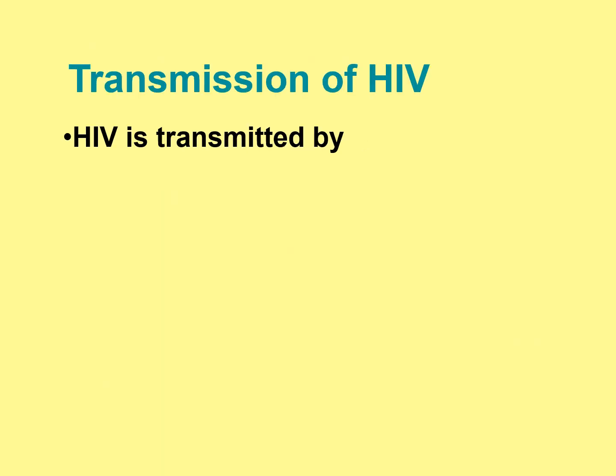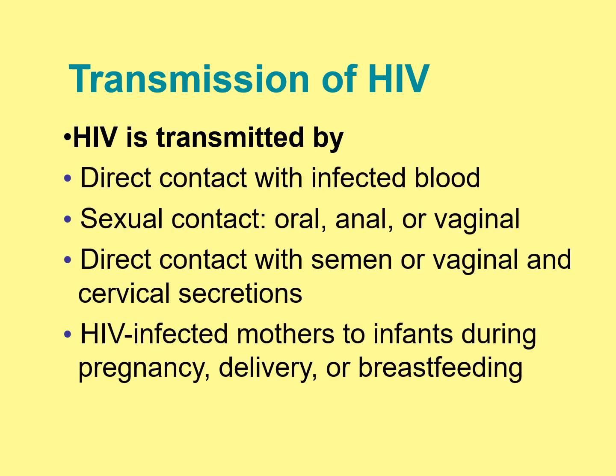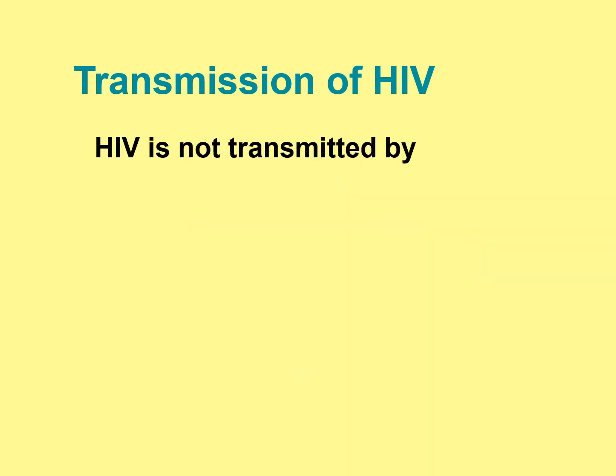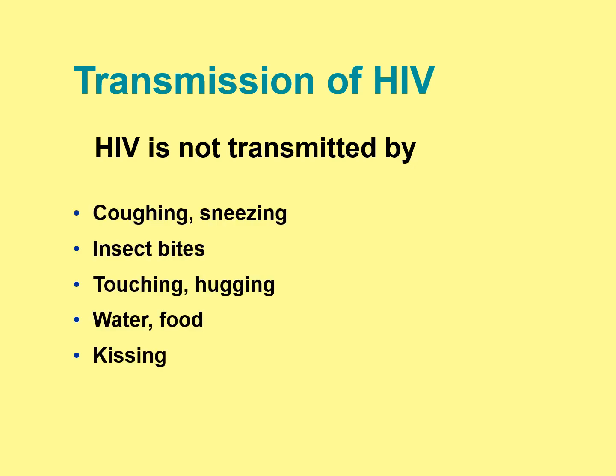HIV is transmitted through direct contact with infected blood, sexual contact — either oral, anal, or vaginal — direct contact with semen, vaginal and cervical secretions, or mother-to-child transmission during pregnancy, delivery, or breastfeeding.